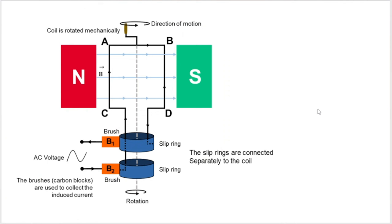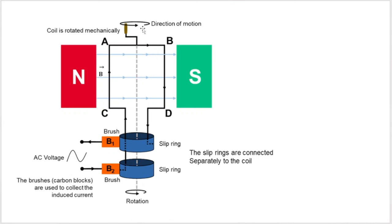So here's an example of an AC generator. We know it's a generator because they tell me that I'm manually or mechanically rotating the coil. So it's mechanical energy being converted into electrical energy. You see slip rings over there. So we know, okay, cool. Slip rings, AC generator.